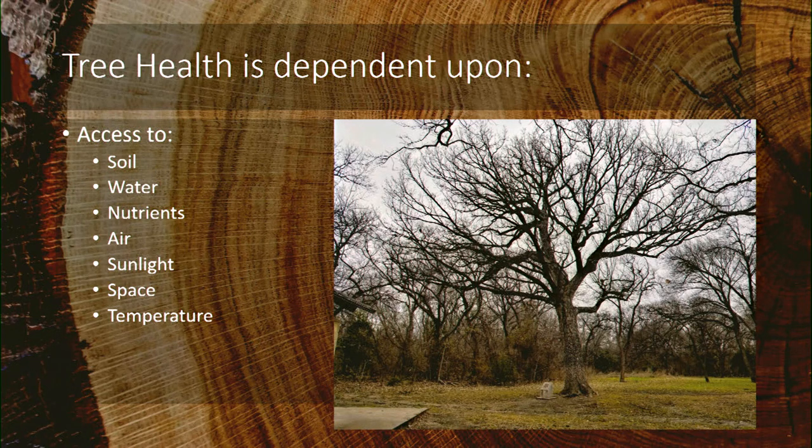Trees also need space to achieve their mature size and the proper temperature range throughout different seasons. The tree in this picture is the bicentennial bur oak at Bob Woodruff Park near the South Pavilion. It's estimated to be about 450 years old and is considered the oldest living thing in North Texas. The park floods regularly, which is an issue for the tree, but it has survived 450 years of flooding.